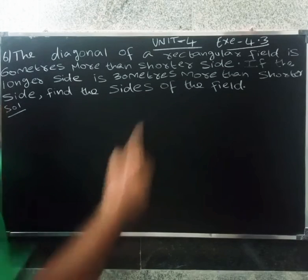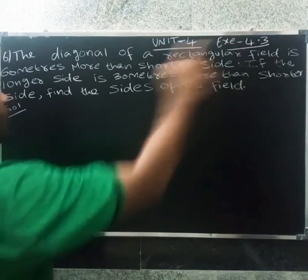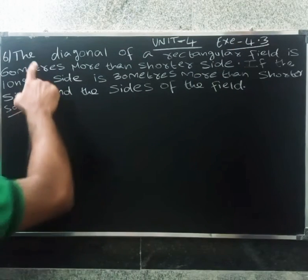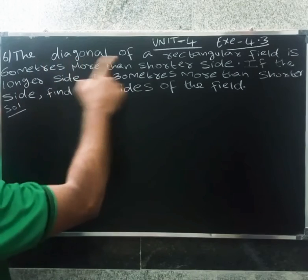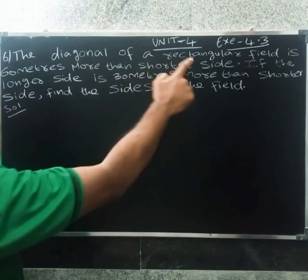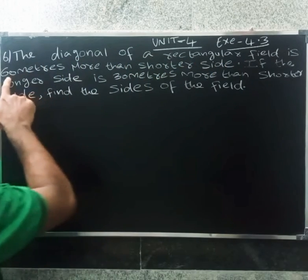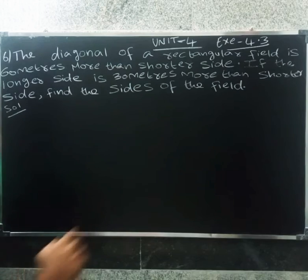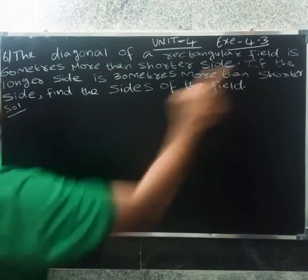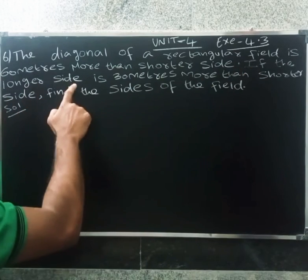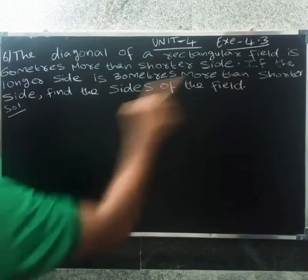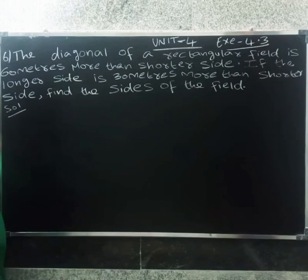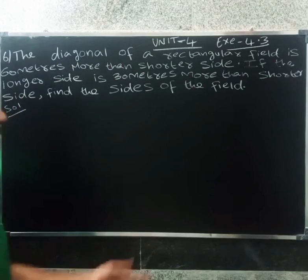Welcome friends. Now we are going to see the next question. The diagonal of a rectangular field is 60 meters more than the shorter side. If the longer side is 30 meters more than the shorter side, find the sides of the field.